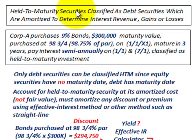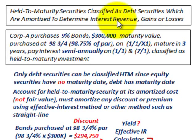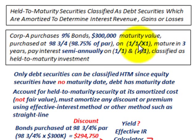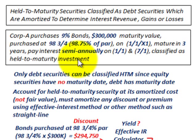We're going to be going over held-to-maturity securities, classified as debt securities, which are amortized to determine the interest revenue on these securities, and also we're going to calculate any gains or losses if these securities are sold before maturity. For example, Corporation A purchases a 9% bond — $300,000 worth — that's their maturity value, purchased at 98.75% of par on 1/1/X1. They mature in 3 years, pay interest semi-annually on 1/1 and 7/1 each year, and are classified as held-to-maturity investments, because the company plans to hold them until they mature.